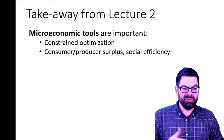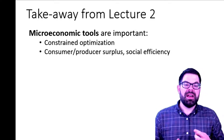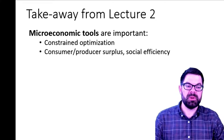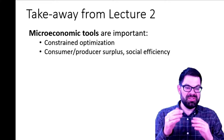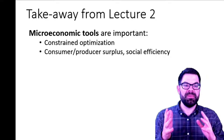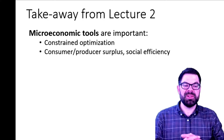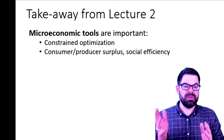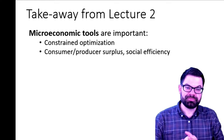We also learned some new tools. The tools that we will need a lot in this course are the ones most of you already know from intermediate micro, which is constrained optimization and social efficiency — things like consumer surplus and producer surplus. We will also think about how subsidies, taxes, price or quantity restrictions work in a market and what the implications are for distribution and efficiency.